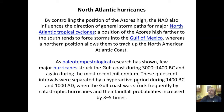Paleo-tempestological research — that is, the study of past storms — has shown that a few major hurricanes struck the Gulf Coast during 3000–1400 BC and again during the most recent millennia. These quiescent intervals were separated by a hyperactive period during 1400 BC to 1000 AD, when the Gulf Coast was struck frequently by catastrophic hurricanes and landfall probabilities increased by three to five times.